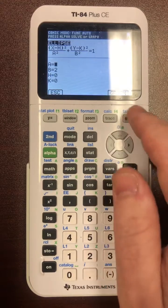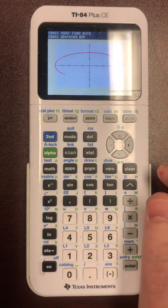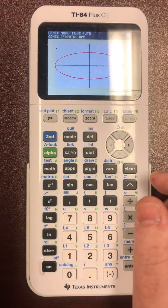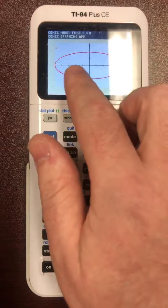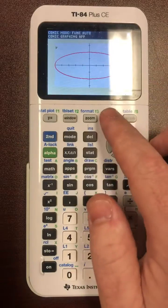After we type all four of those in, we hit graph and it custom zooms and draws it precisely. 1, 2, 3, 4, 5 - yes. 1, 2 - yes.